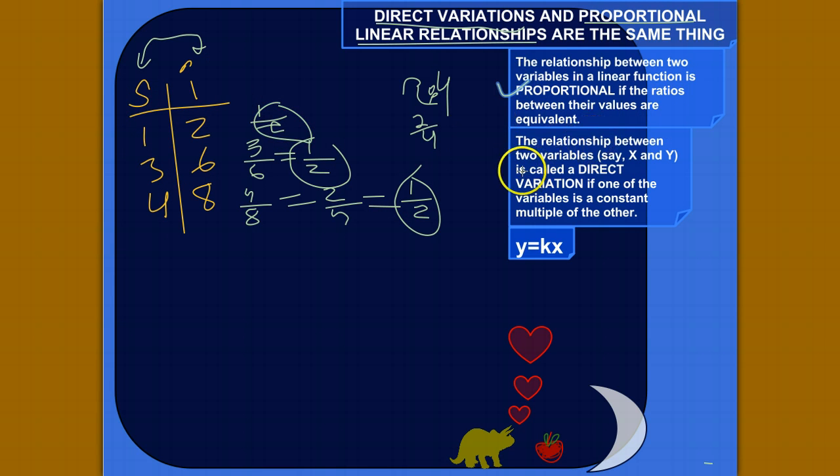Okay, now semi-switching gears. The relationship between two variables is called a direct variation if one of the variables is a constant multiple of the other. We write that like y equals kx, and this k just stands for constant. I don't know why we don't say y equals cx. Maybe it's a German guy who came up with this. Anyway, so for example, let's look at this guy again.